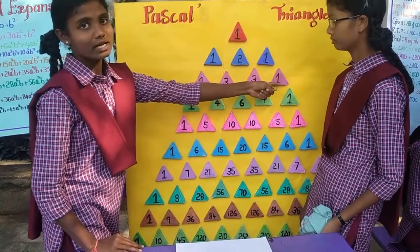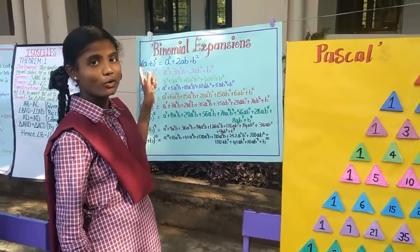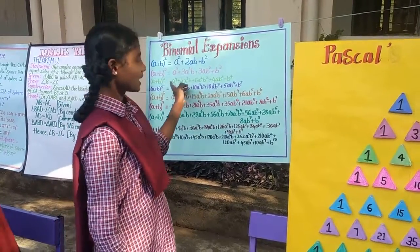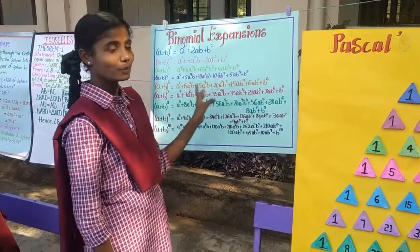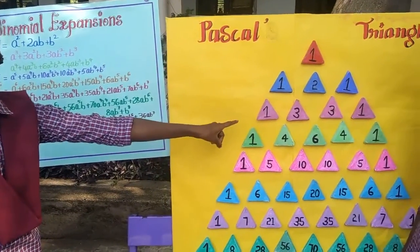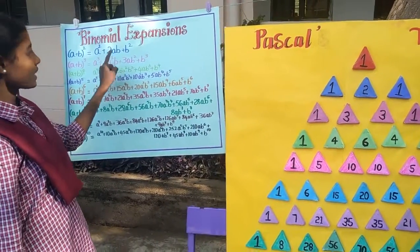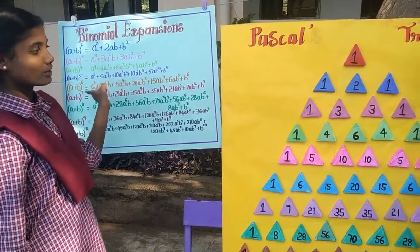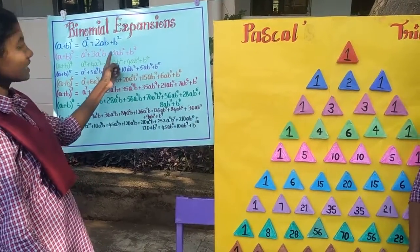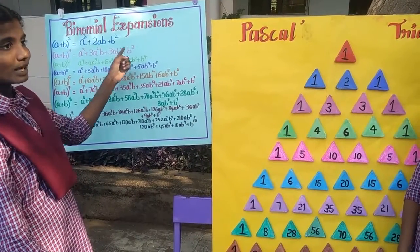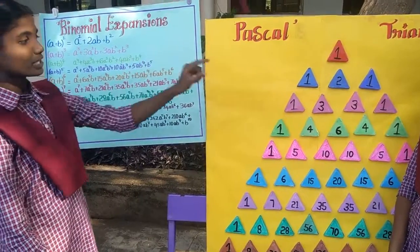Here 1 is constant. So (A+B) whole cubed equals A cubed. The coefficient of A cubed is 1. Then the coefficient of 3A squared is 3. Then the coefficient of 3AB squared is 3. Then the coefficient of B cubed is 1.